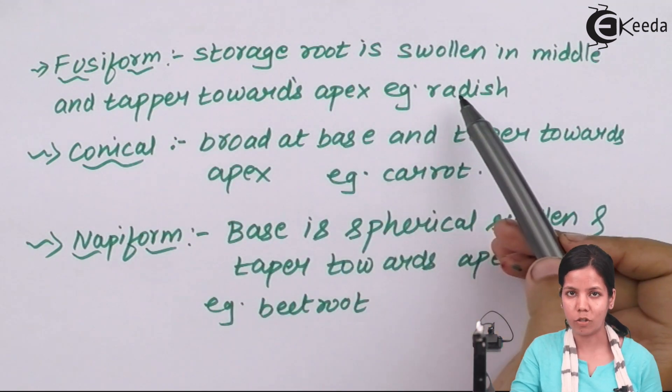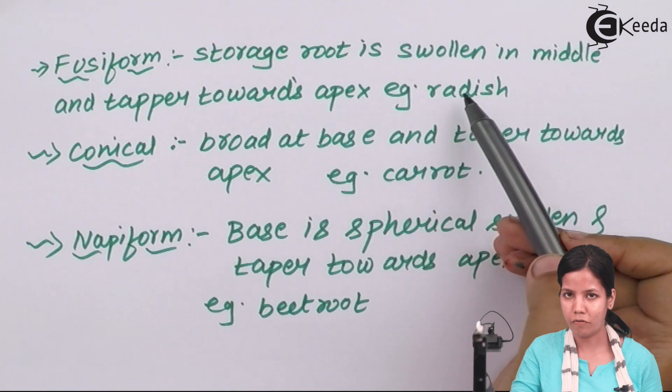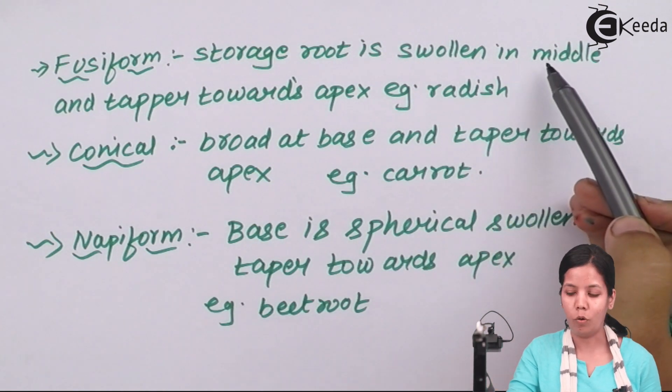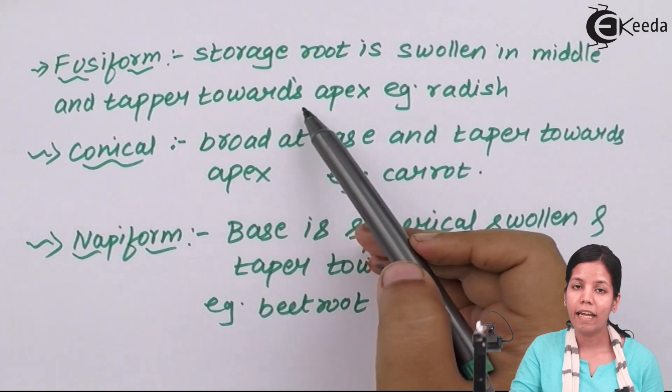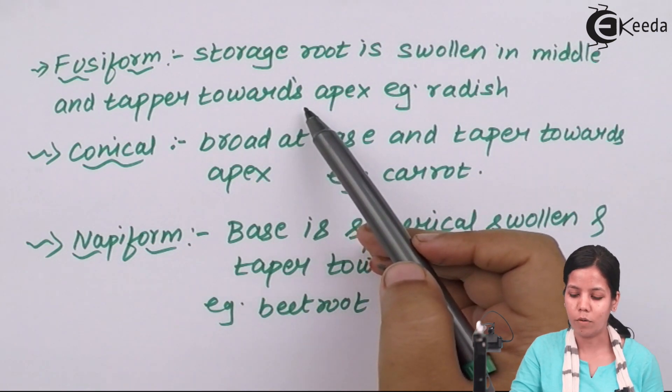In fusiform, if you have seen the structure of radish, the middle part is always swollen, and when you come to the ending part it tapers or it lowers down.